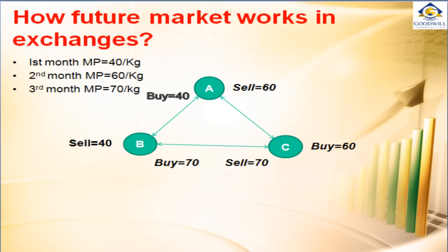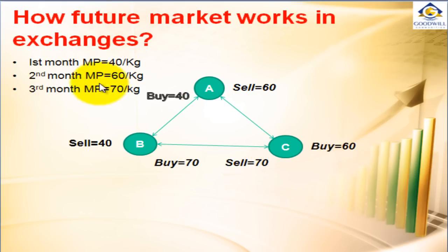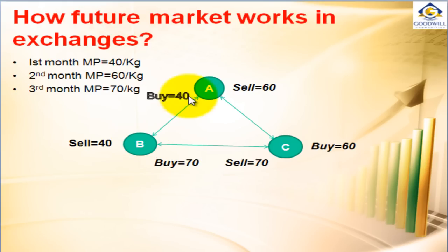Now let us see how futures markets work in the exchanges. We will take the same example of rice as an underlying asset with a three-month contract expiry. Let us assume there are three traders: A, B, and C. In the first month, the market price is around Rs 40 per kg. Trader A thinks it is a good price to buy rice, while trader B thinks it is a good price to sell rice at Rs 40 per kg. So they both entered into a contract: A bought at Rs 40 and B sold at Rs 40.